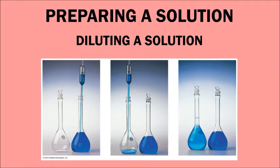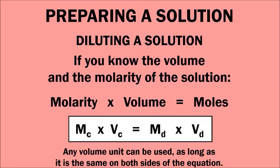Another way to prepare a solution is by dilution — taking a portion of an existing solution, adding it to another flask, and adding water. As shown in the pictures, a dark blue solution is diluted, and the final solution has a lighter shade of blue, indicating a lower concentration. Using molarity times volume equals moles, you can calculate either the volume of solution to measure out or the final molarity of the diluted solution.